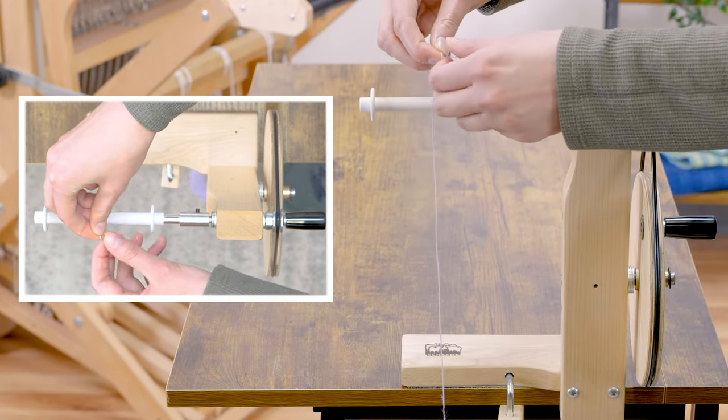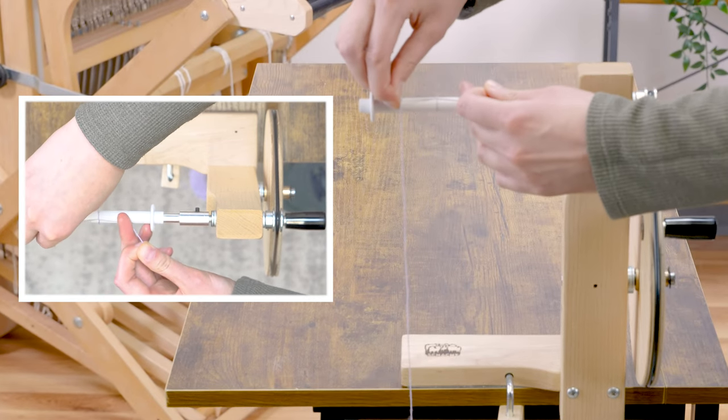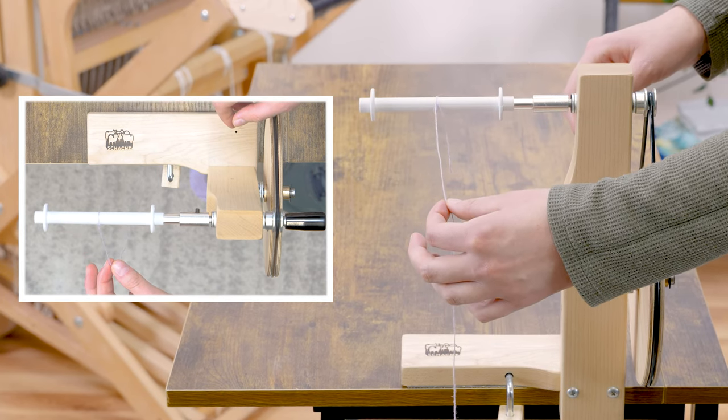Tie a knot on the bobbin and then pull gently down on that thread. Start winding, being careful for the first few rotations so your knot doesn't come out.